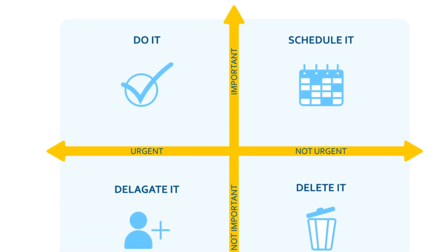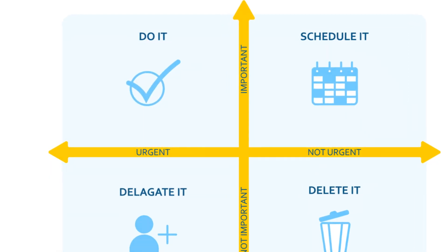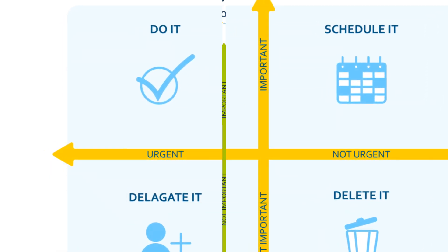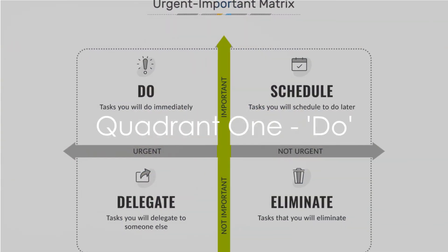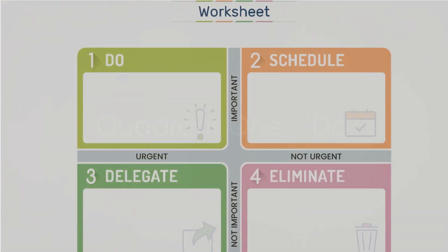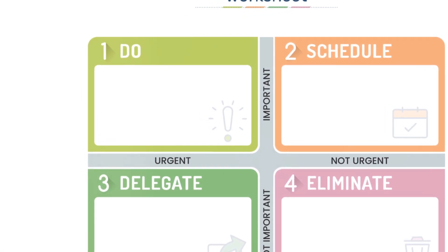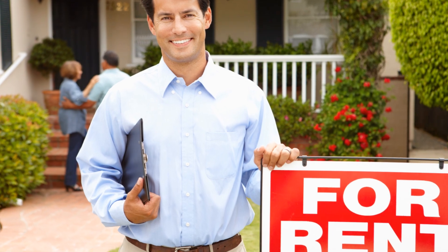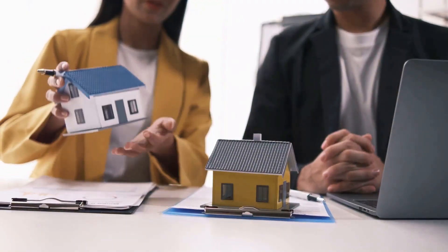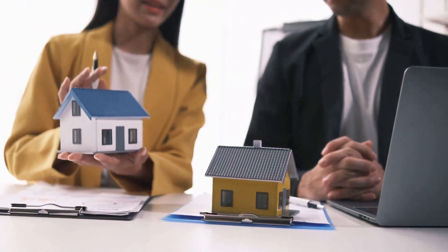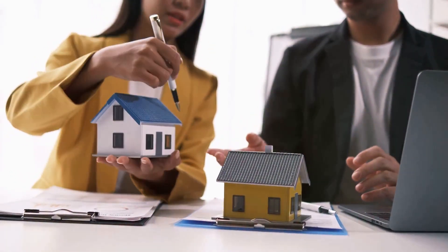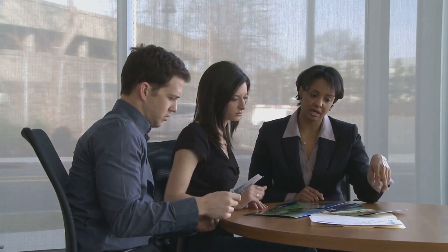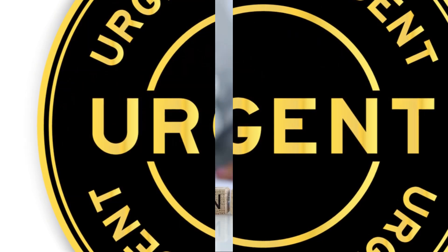It consists of four quadrants, each representing a different category of tasks. Quadrant 1, also known as the Do Quadrant, contains tasks that are both urgent and important. For a real estate agent, these could include responding to a client's immediate inquiry, handling a contract negotiation, or addressing a property inspection issue. These tasks require immediate attention and action.